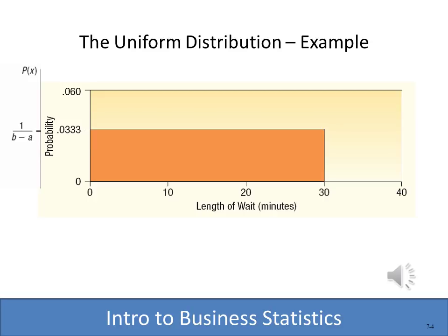For any specific minute — 10 minutes, 20 minutes, 30 minutes — the probability is uniform. The probability of getting exactly 10 minutes is 0.33, and the probability of getting 20 minutes is also 0.33. All of the possible occurrences will appear in that uniform distribution. Taking 0 to 30 and multiplying by 0.333, we end up with 100%.